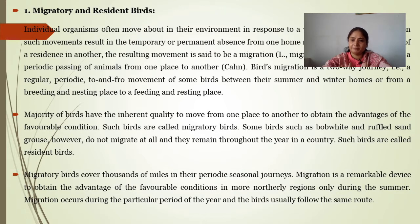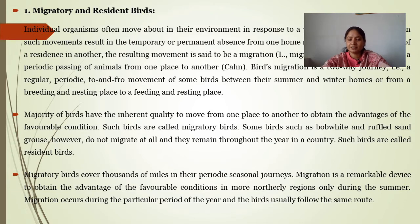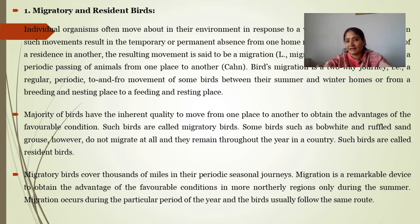We can divide birds into two types: migratory birds and resident birds. The majority of birds have an inherent quality to move from one place to another to obtain advantages of favorable conditions — related to feeding, protection from enemies, protection from physical environmental conditions, and breeding. Such birds are called migratory birds. Some birds, such as bobwhite and rougher grouse, do not migrate at all and remain throughout the year in one place. These are called resident birds.